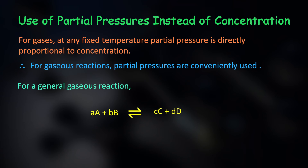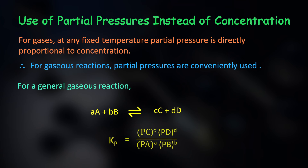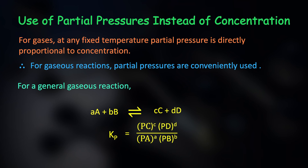For gaseous reactions, partial pressures are conveniently used. For a general gaseous reaction, Kp is the partial pressure constant, in which we write Pc — the partial pressure of C — instead of molar concentrations or masses.